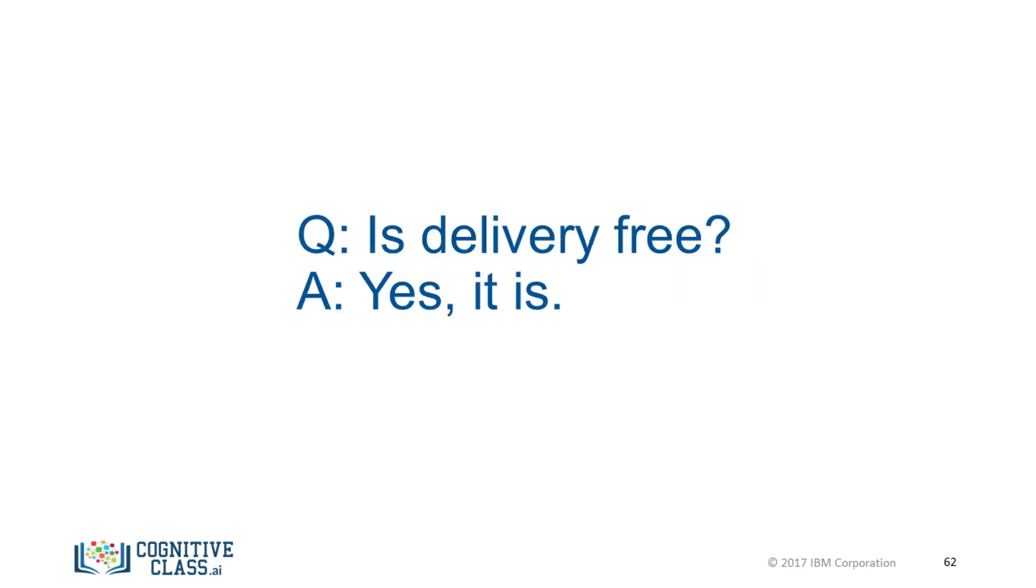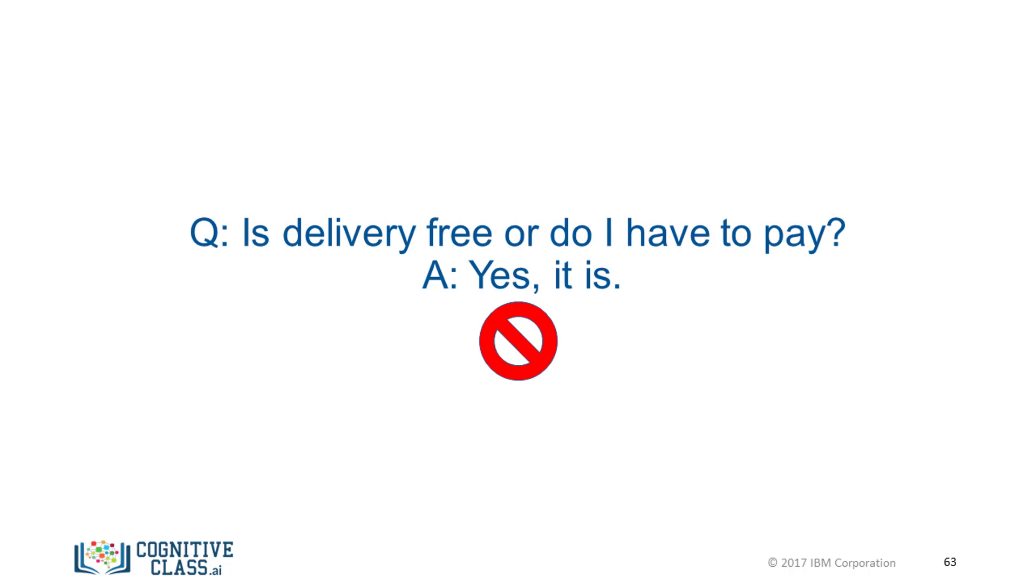For example you might be tempted to set the response for 'is delivery free' to 'yes it is.' But what happens when the user asks the bot 'is delivery free or do I have to pay?' Watson will pick up the right intent, but the 'yes it is' answer won't work here. There are situations, perhaps because of negatives introduced in the input, where the chatbot will respond yes when a human will correctly respond no. It's far better to provide an answer that covers the topic of delivery price without including an absolute yes or no element within it. So 'deliveries are free' is definitely a much better option than 'yes it is.'